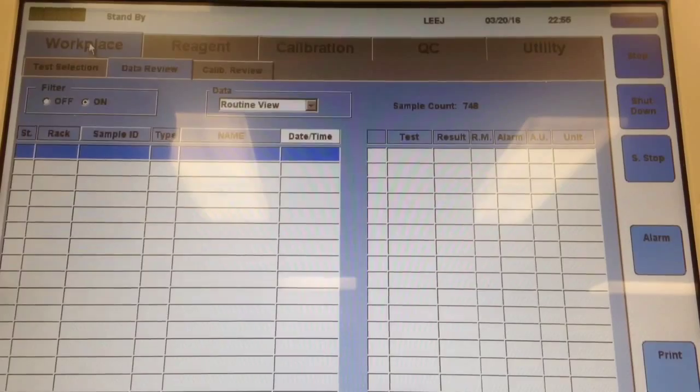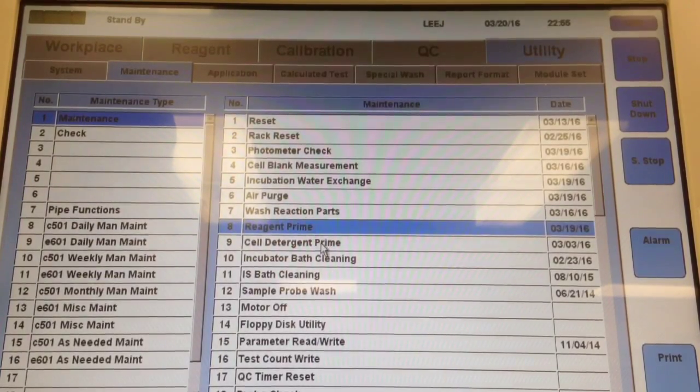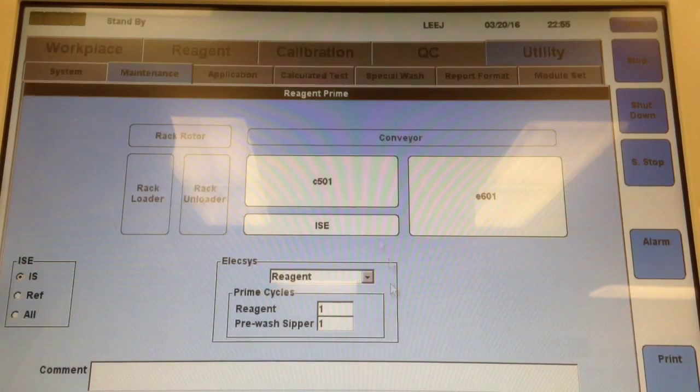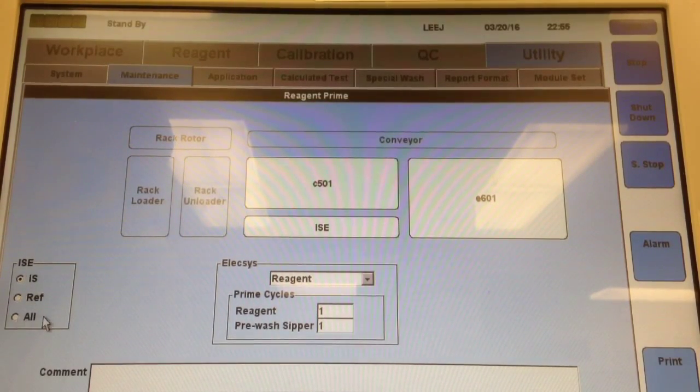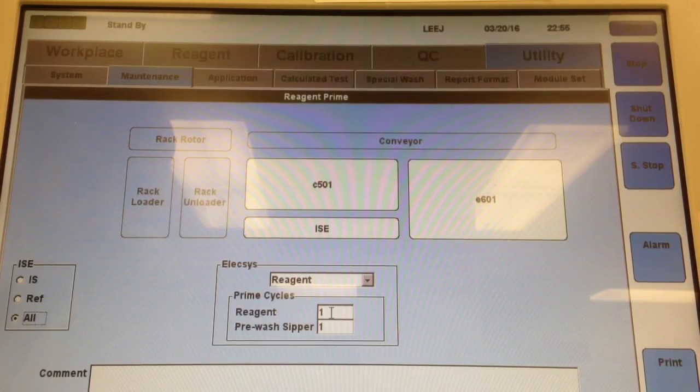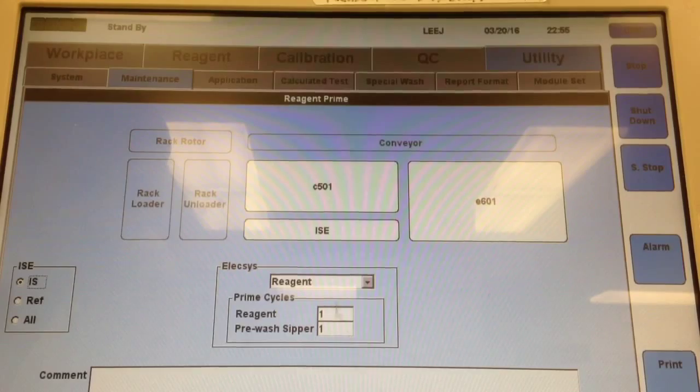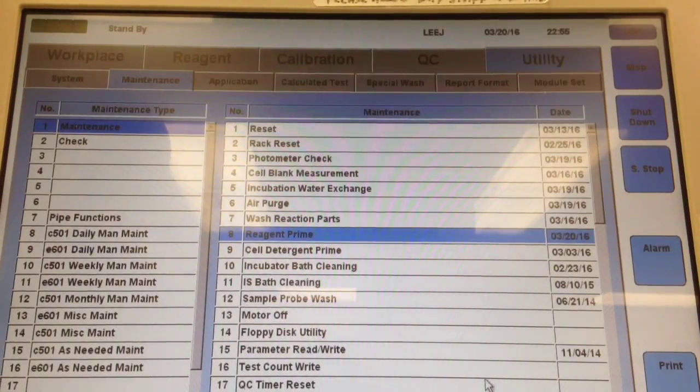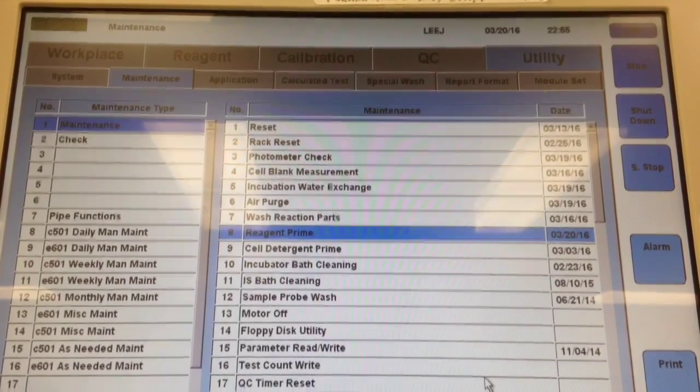Then we're going to go ahead and do a reagent prime. I'm just going to do one reagent prime in this video, but I am also later going to run the green rack and do the daily pipe, which will prime some more. Just go ahead and do however many primes you would like to do. One should be fine if you're going to do the other things. And that's all there is to it. Thank you for watching.